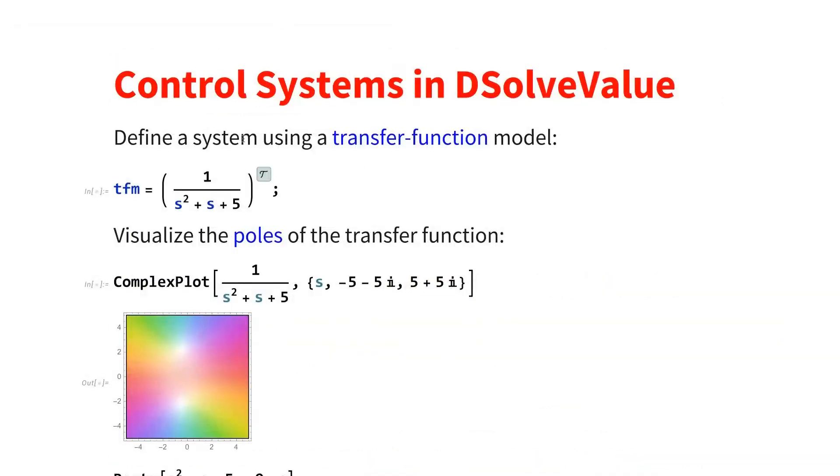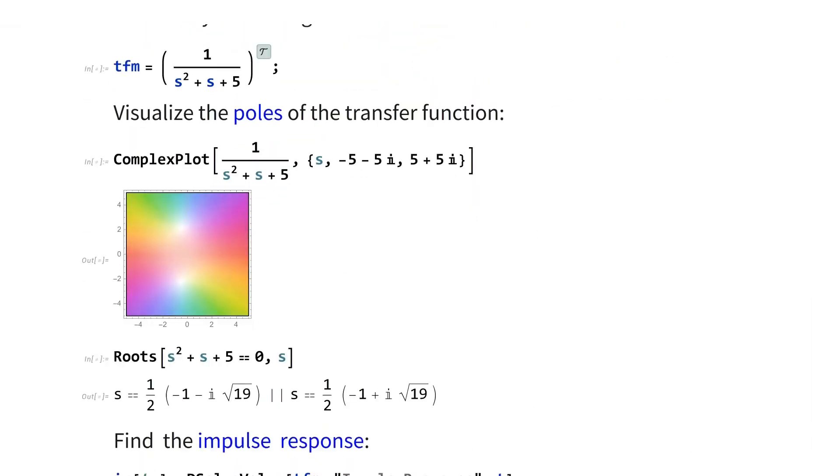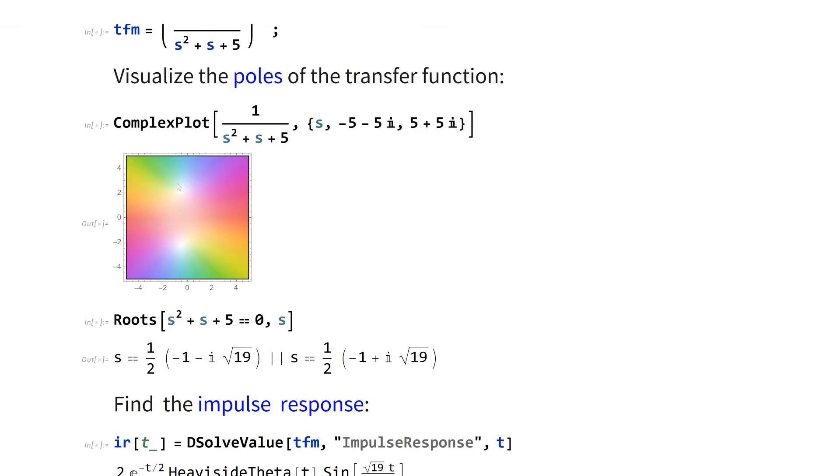So as an example, let's talk about a transfer function model. You see the S is a Laplace variable. That's a transfer function model. What you do is you look at the poles of the system, of the rational function. And you see that the denominator, S squared plus S plus 5, has got two roots.